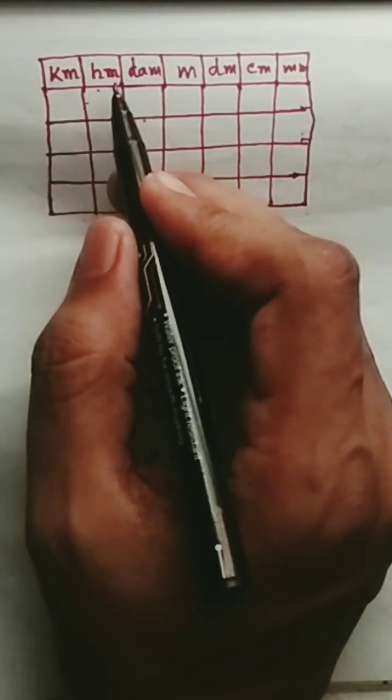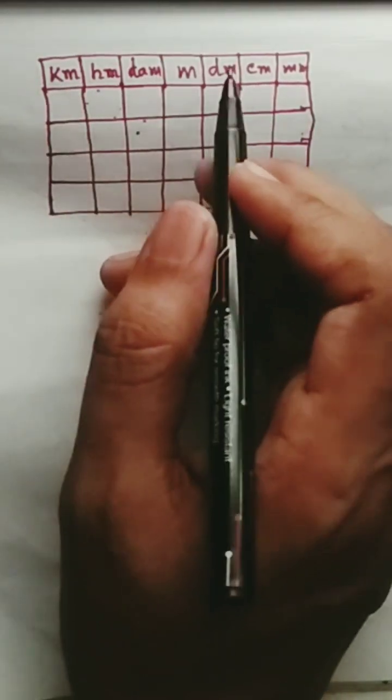Welcome friends. See the table. Kilometer, hectometer, dekameter, meter, decimeter, centimeter, millimeter.